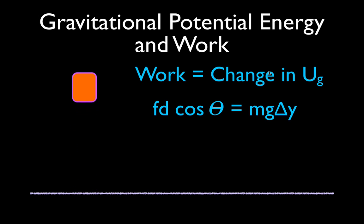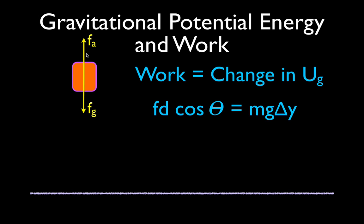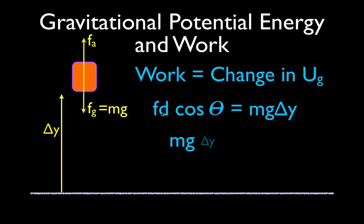We're going to use our work equation: W equals Fd cosine theta — the force applied times the distance over which the force is applied, times the cosine of theta, where theta is the angle between the displacement and the force. This equals the change in potential energy, mg delta y. If we raise the object at constant velocity, the applied force equals the force due to gravity, so the applied force equals Mg. We substitute Mg for F, and we substitute delta y for the distance, giving us Mg delta y.